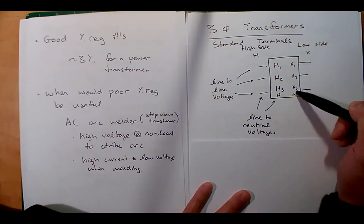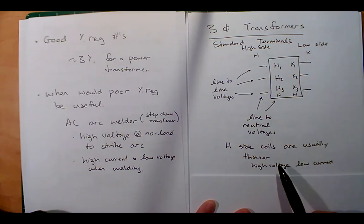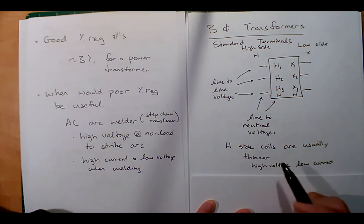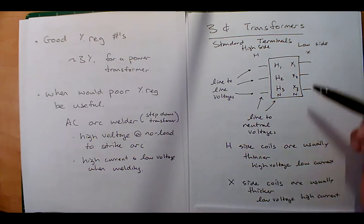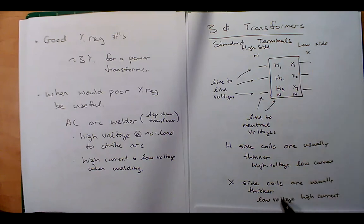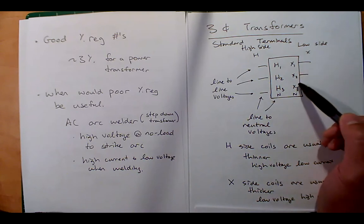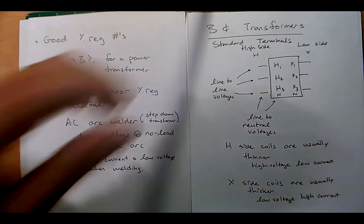Voltages from any H point to the neutral are the line-to-neutral voltage. If you inspect a real three-phase transformer, the high-side coils are usually thinner because you have high voltage but low current — that's the big benefit of transmitting at high voltage: low current and low heat losses. The low-side coils are probably going to be thicker because they carry low voltage and high current. That's where your commercial or residential service has that thicker wire.